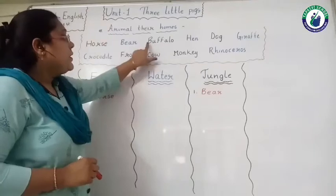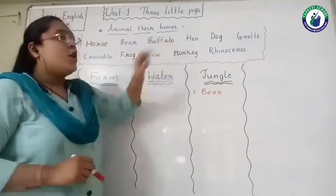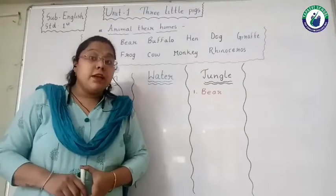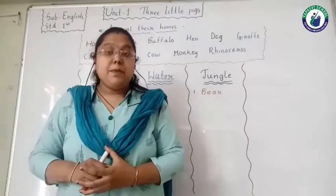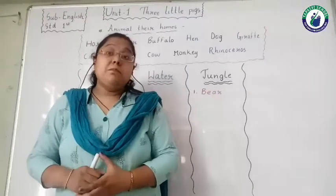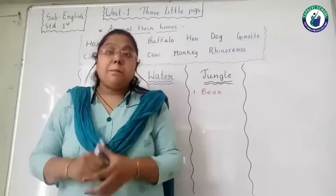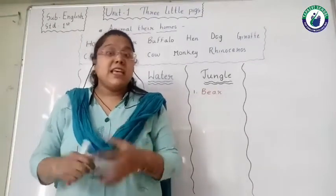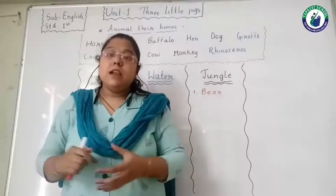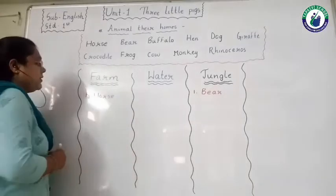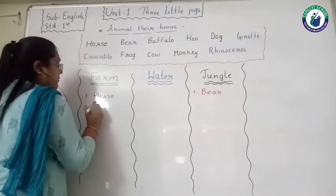Number three — B-U-F-F-A-L-O, buffalo. Buffalo means bhains. We can see buffalo near our house — some families even get buffalo milk at home because they keep it as a pet. They are giving milk to us, so buffalo comes in the farm animal column.